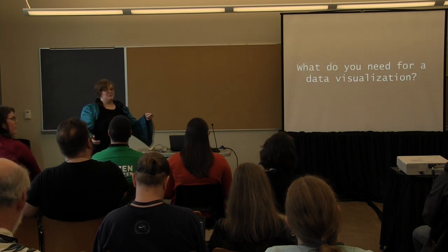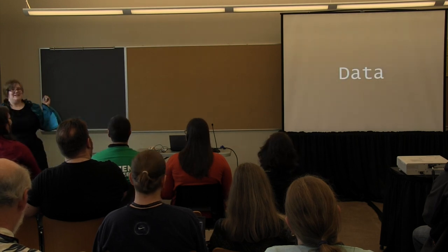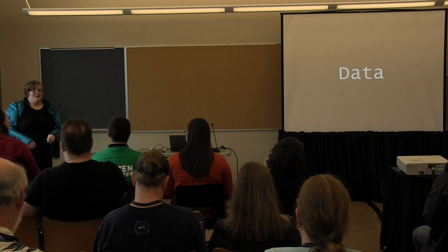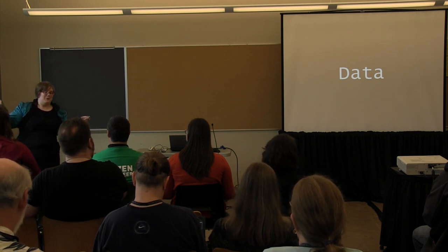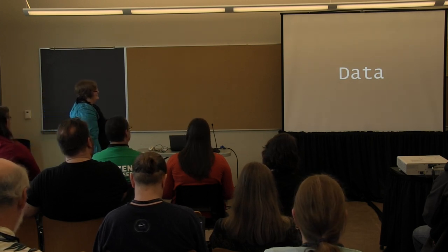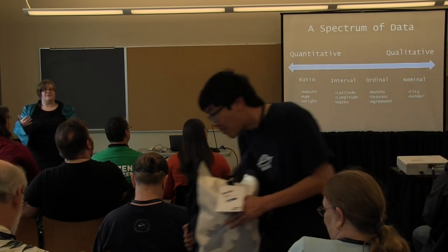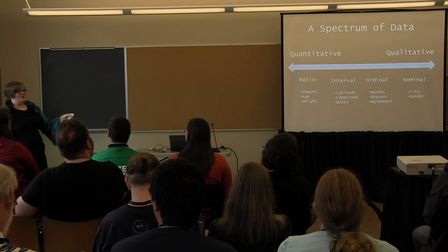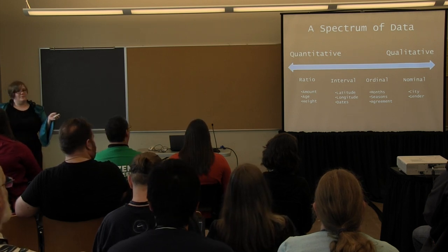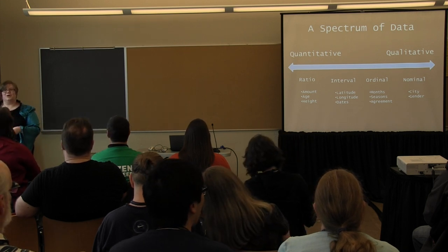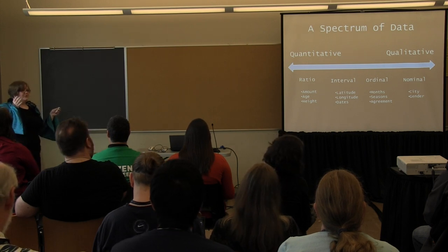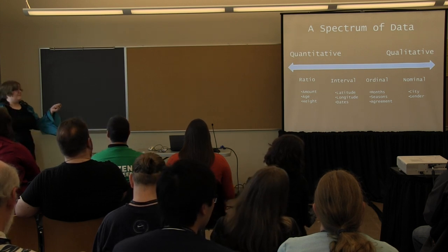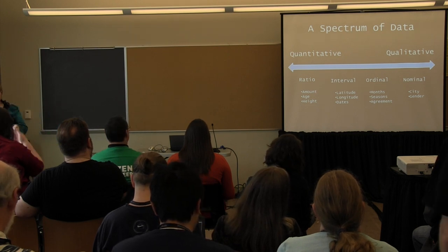What do you need for a data visualization? Lots of different people call data lots of different things, and there are a spectrum of quality and quantity. The two spectrums I find helpful: we have the qualitative-quantitative spectrum. You go from qualitative data — names, often free text, categories — all the way to quantitative data, what we often think of as data, which is numbers upon which you can do lots of statistics.